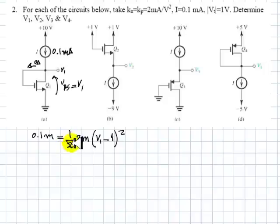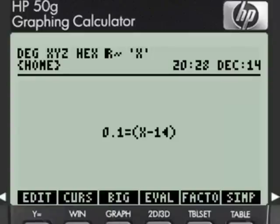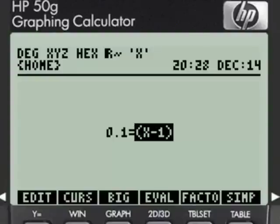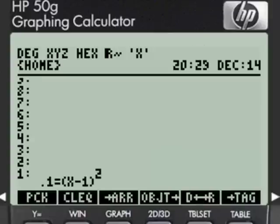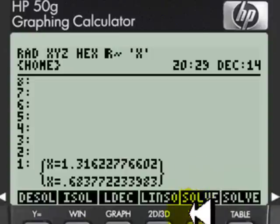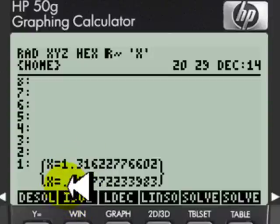We cancel this 2 with this 2. We cancel this mA with this mA. And then we enter the equation in the calculator. I'm using X instead of V1 because it's easier to type. Highlight, highlight, highlight both to the second part. That is my equation, and I say symbolic solver, solve for X. And the answers are for that voltage either 1.32V or 0.68 volts, one of them.